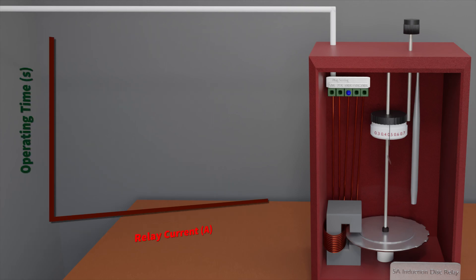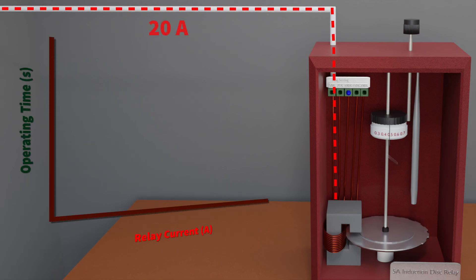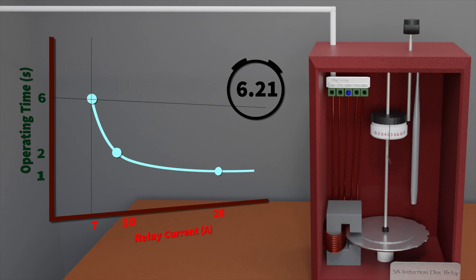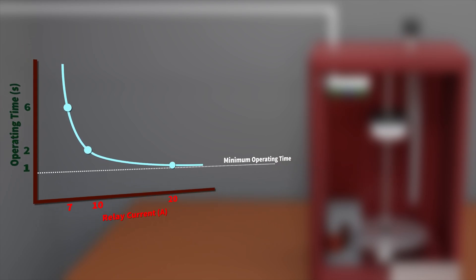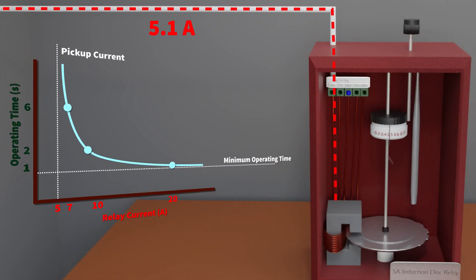Let's plot the operating time of the relay as a function of relay current. As expected at high current the relay operates very fast but as the current drops the operating time becomes longer. And it's important to recognize two features of this curve. Firstly we have a minimum operating time. No matter how high the current gets the operating time will not drop below this. Second we have what's known as the pickup current. This is the minimum current at which the relay will start operating albeit very slowly.